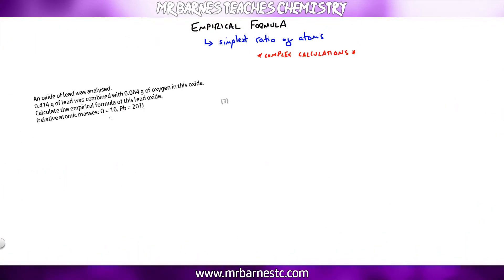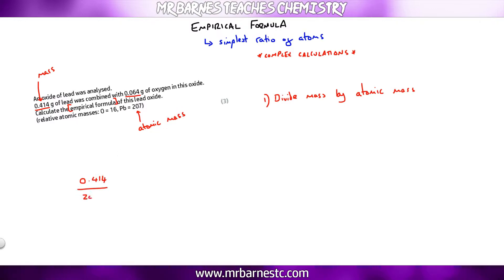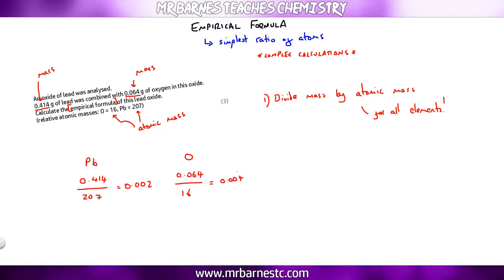For the complex empirical formula calculation, the question says an oxide of lead was analysed: 0.414 g of lead was combined with 0.064 g of oxygen — calculate the empirical formula. The first step is to divide the mass by the atomic mass. For lead: 0.414 ÷ 207 = 0.002. For oxygen: 0.064 ÷ 16 = 0.004. That gets you one mark in the exam.